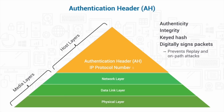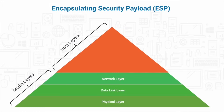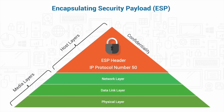AH's assigned IP protocol number is 51. The second IPsec protocol option is Encapsulating Security Payload, or ESP. It's commonly used with IPsec because it provides everything that AH provides plus confidentiality. ESP's assigned IP protocol number is 50. Like AH, ESP encapsulates the host layers 4 through 7 into a new Layer 4 header called an ESP header. Unlike AH, it encrypts the encapsulated data, preventing someone from reading the data if it's sniffed.